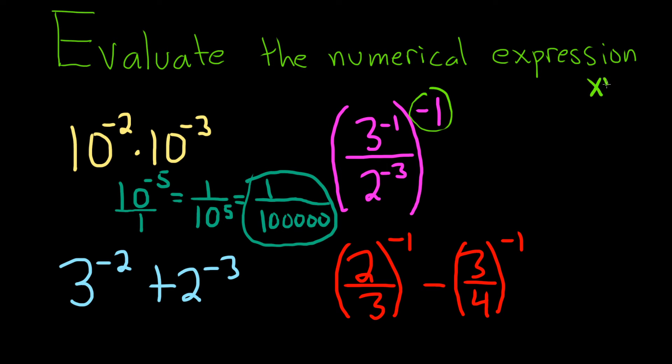So if you have x to the m, or if you have x over y to the n, that's the same thing as x to the n over y to the n. So you just raise each piece to the negative 1 power.